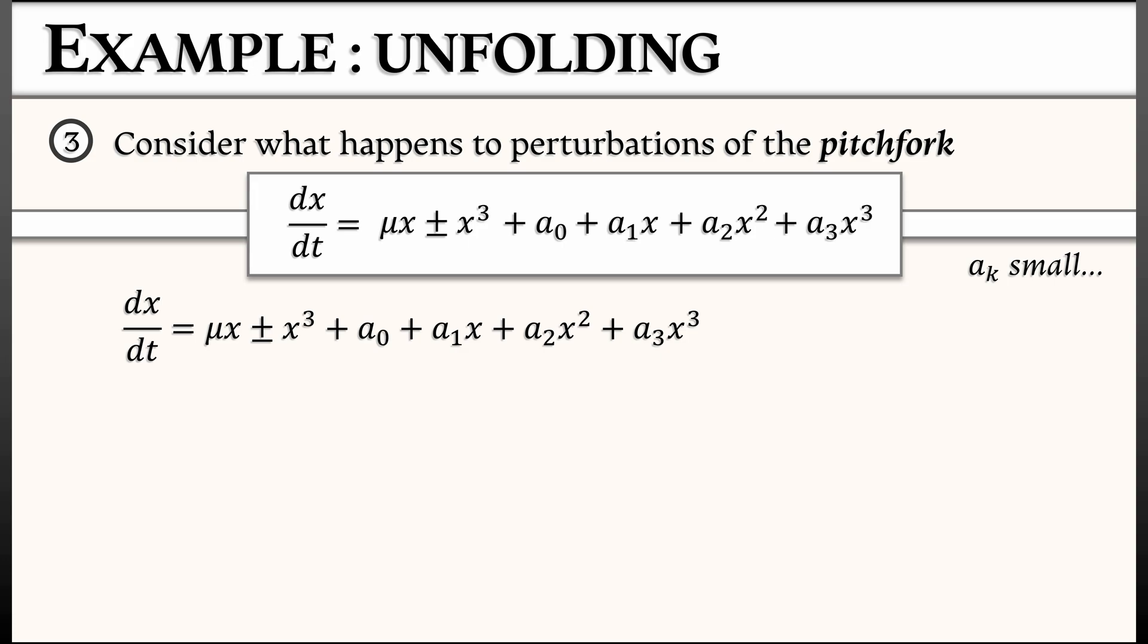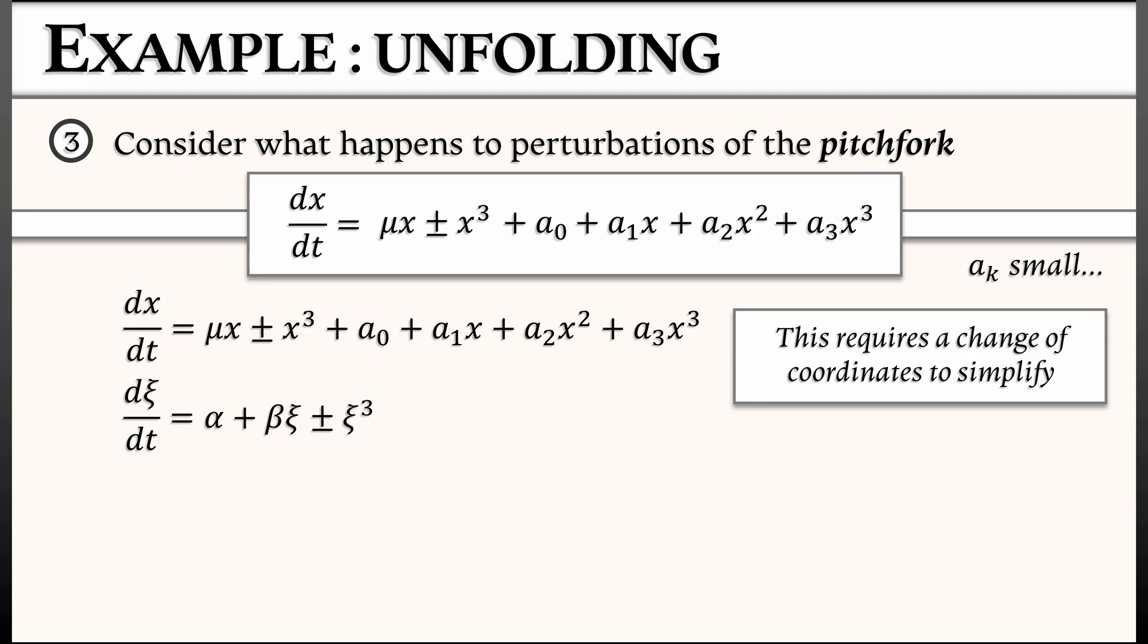This is going to require some more serious algebra than we have space for on this page. So trust me that with the appropriate change of coordinates from x to xi and from our parameters mu and all of these a's to now two parameters, alpha and beta,